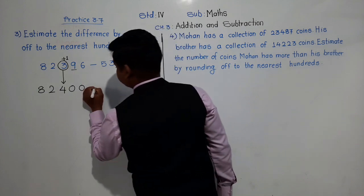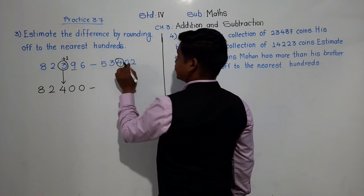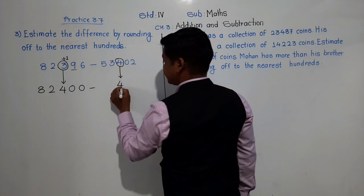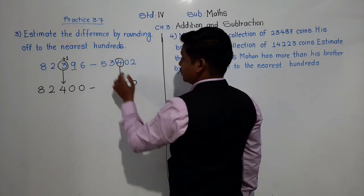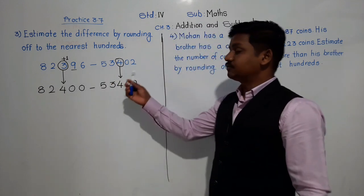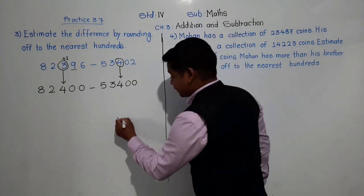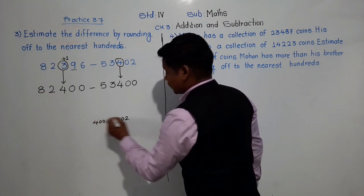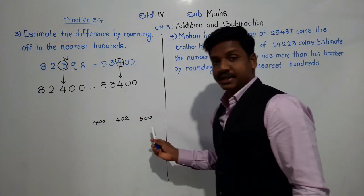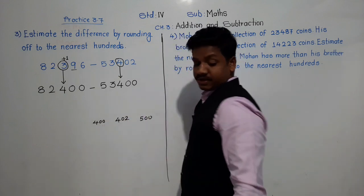Similarly, let us round off the next number, 53,402, to the nearest 100. At the hundreds place there is 4, and the next digit is 0. Since 0 is less than 5, we do not add 1 — we take 4 as it is. For the next two digits put 00, and previous digits as they are, giving us 53,400. The three-digit portion 402 comes between 400 and 500, and 402 is close to 400, so we get 400.